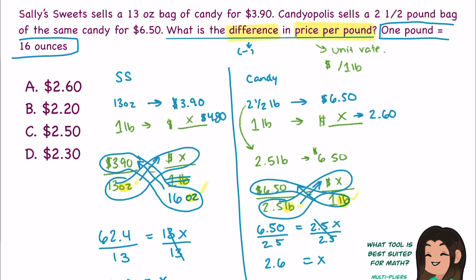Now let's check. Does this make sense? Sally's Sweets was selling a 13-ounce bag of candy for $3.90. If we want one pound of that candy, which we figured out was 16 ounces, well, 16 ounces is more than 13 ounces. So it should cost more, and it does. It costs $4.80.